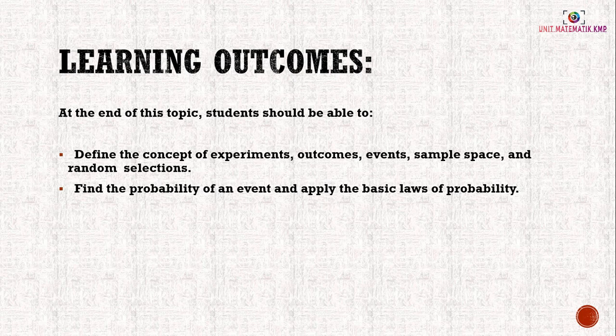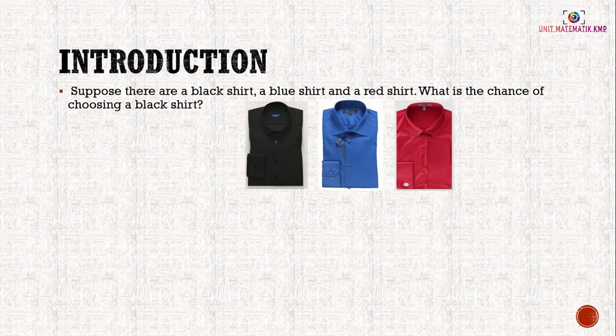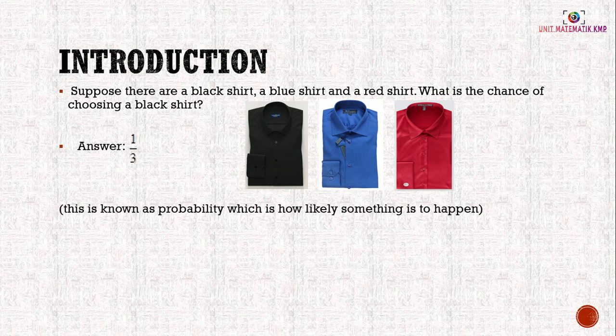As an introduction, suppose there are a black shirt, a blue shirt, and a red shirt. What is the chance of choosing a black shirt? The probability of getting a black shirt is one over three — one black shirt out of three shirts. This is known as probability, which is how likely something is to happen. Probability, or kebarangkalian, is something we encounter all around us.